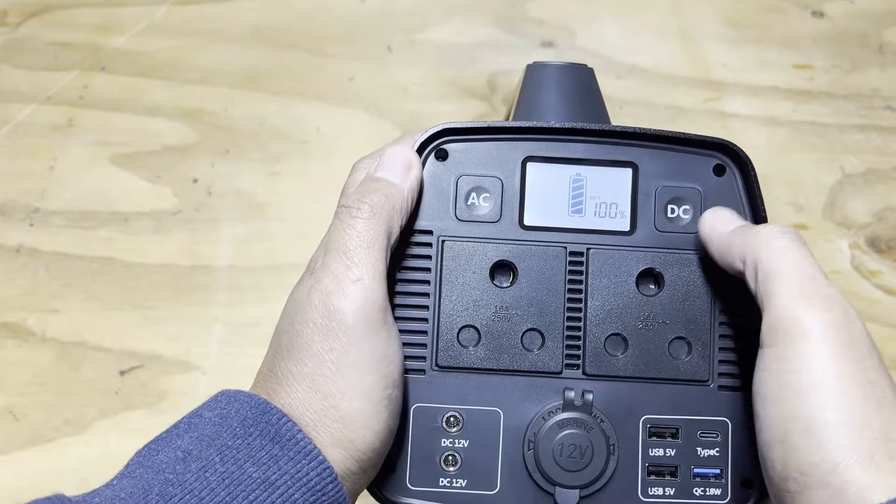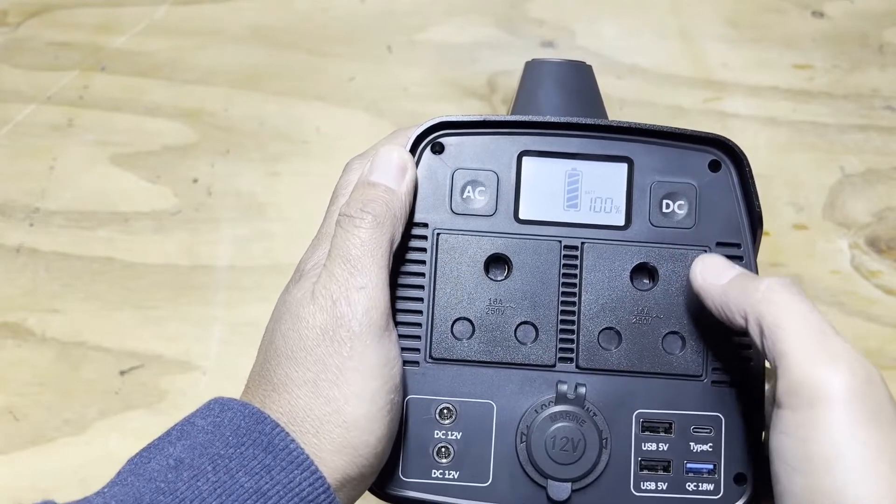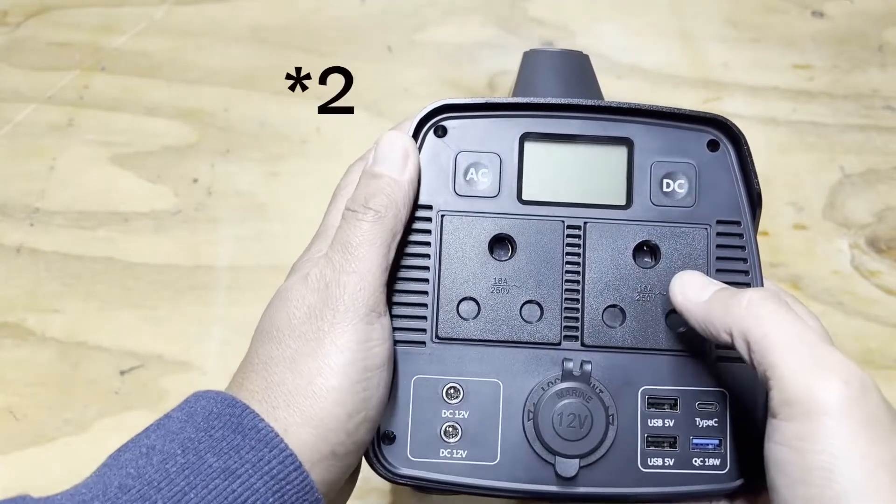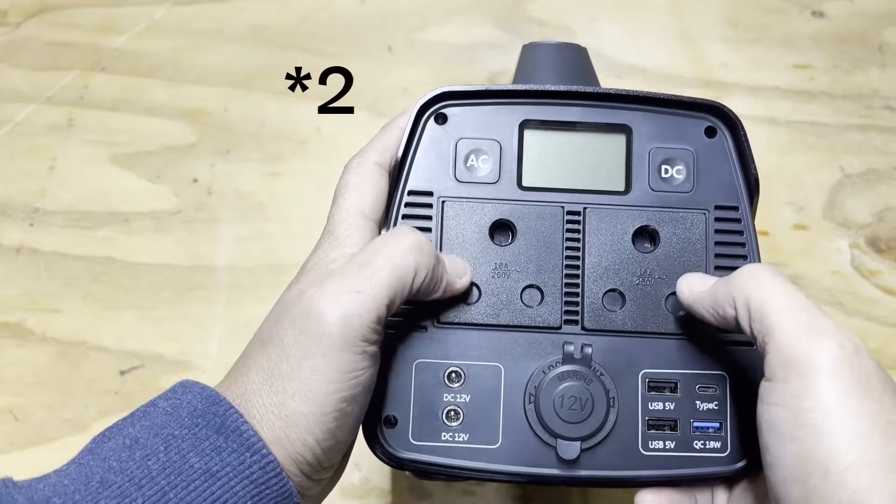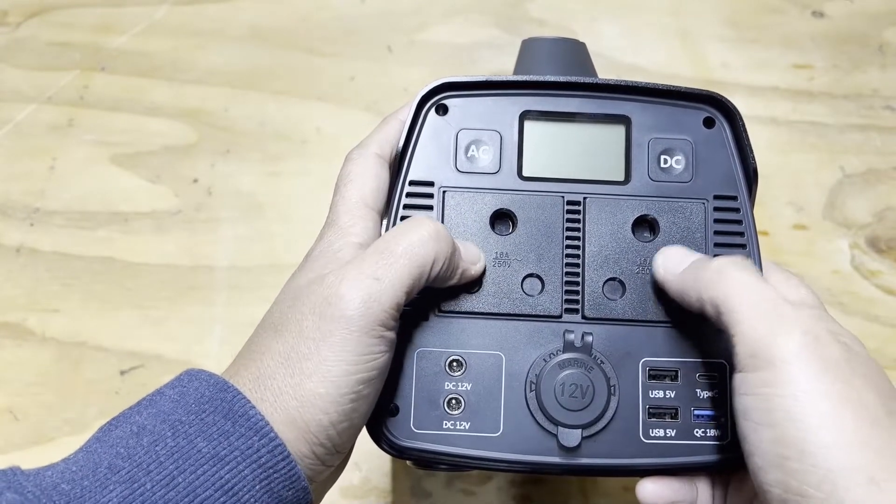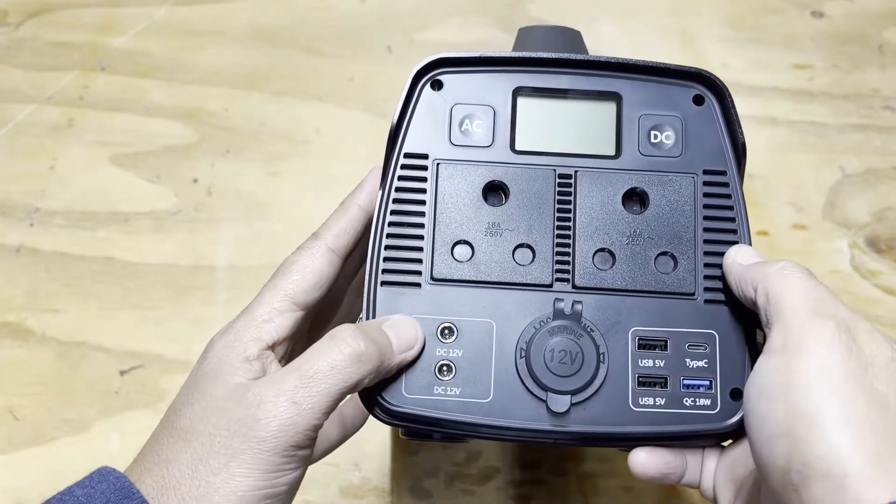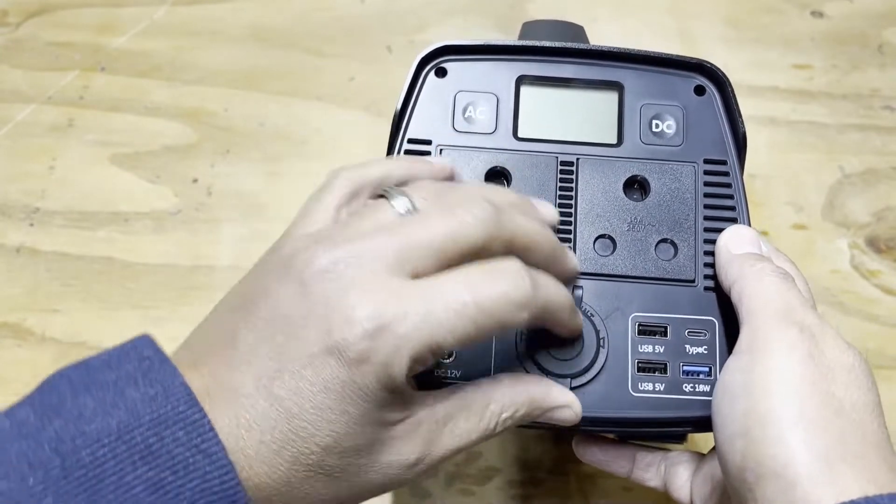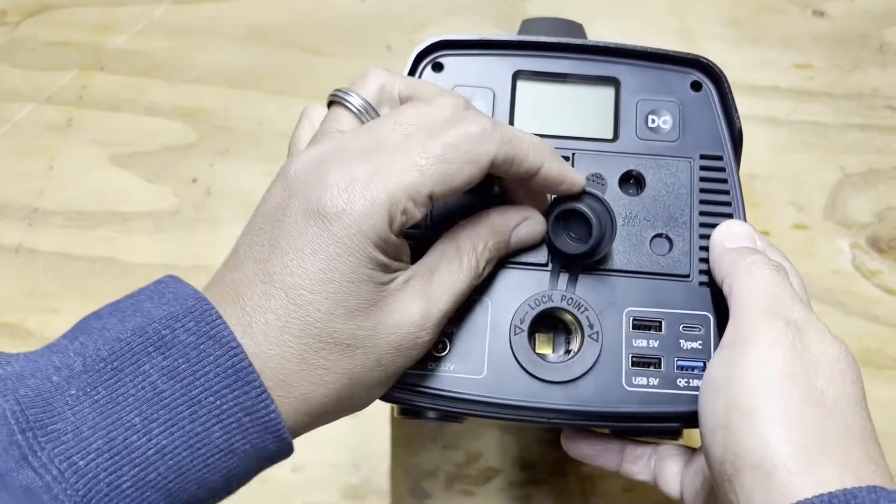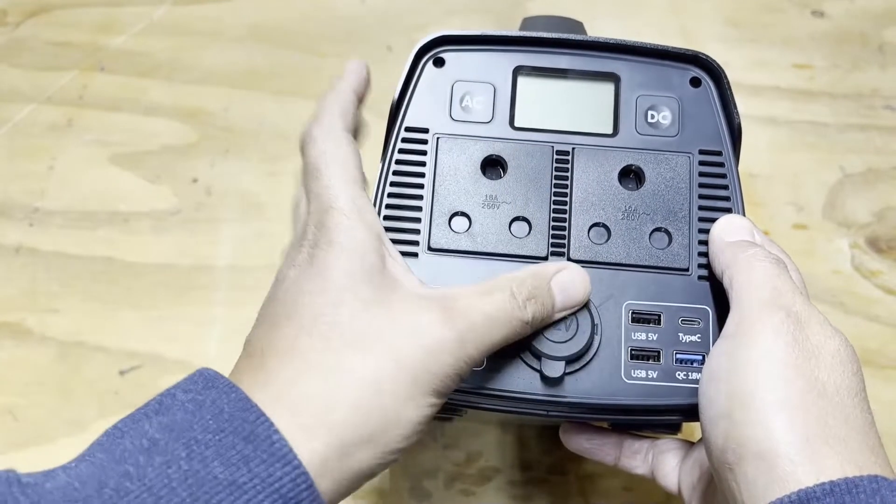You can see the battery is 100%. And the front of the unit you can see it's got three AC outlets, 250 volts, 16 amps. You've got DC 12 volts, two of them. You've got a cigarette type lighter socket there.